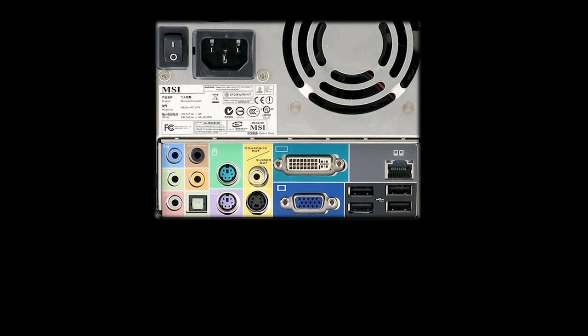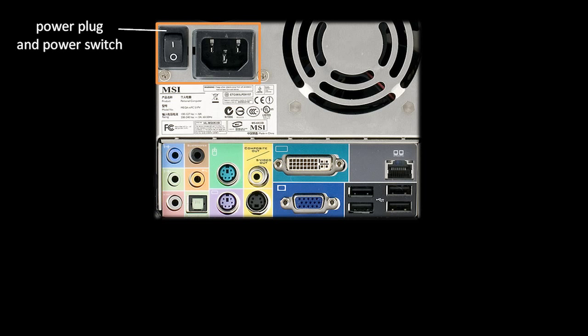If you look at the back of a desktop system, you'll see all sorts of connectors, so let's walk through them. First off, you should see a plug for a power cord, and next to it, a switch. This switch is not the power button, but it must be in the on position for your computer to have power. It's simply there as a convenience so you can cut off power to the system without pulling out the cord.